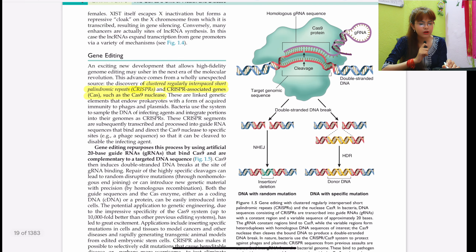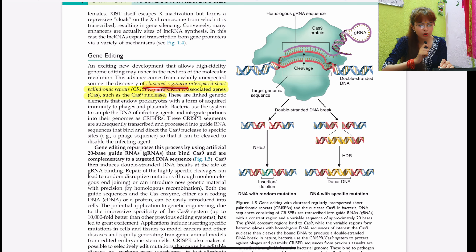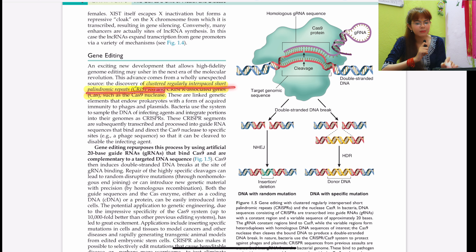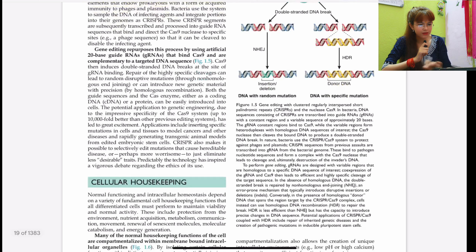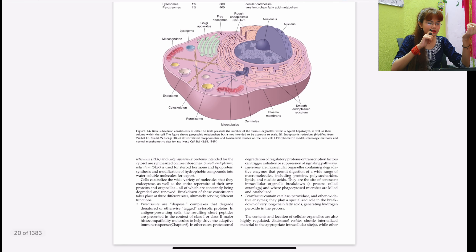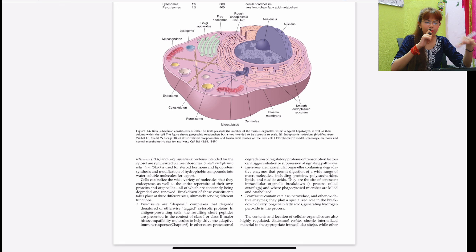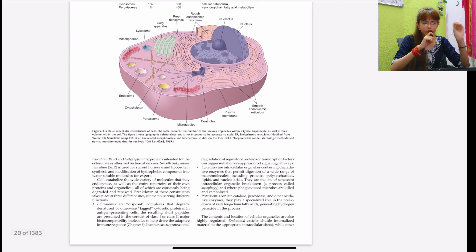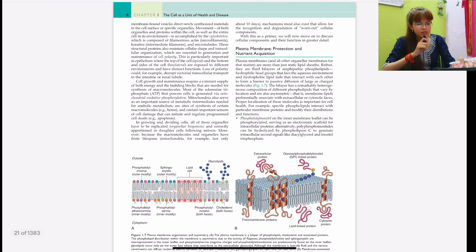Gene editing is done by CRISPR — Clustered Regularly Interspaced Short Palindromic Repeats. An example is the Cas9 nuclease. These are not as high-yield for exams, but note that if your college or state syllabus includes extra topics, please go through those as well. I have mentioned what I feel is important from undergraduate, postgraduate, and entrance examination perspectives.